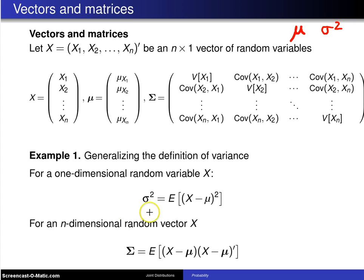For an n-dimensional random vector x, the variance-covariance matrix will be the expected value of x minus mu times x minus mu transpose.